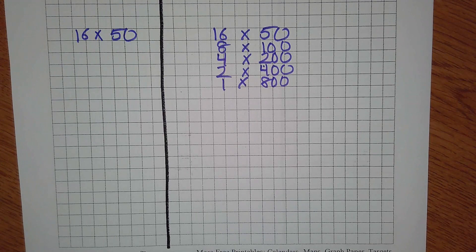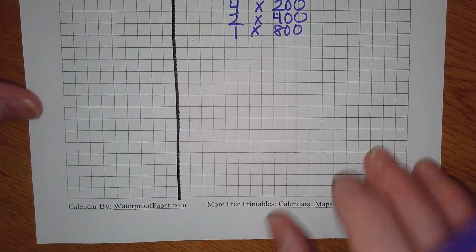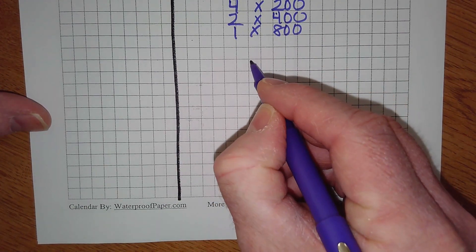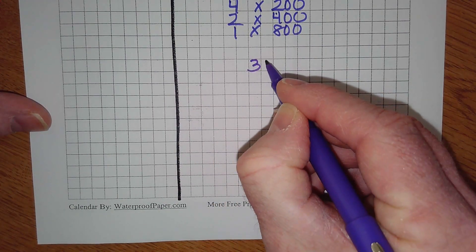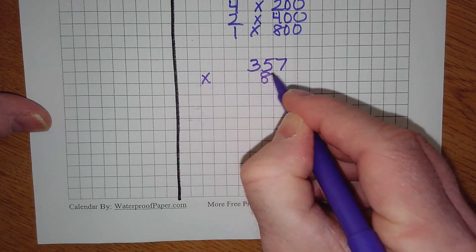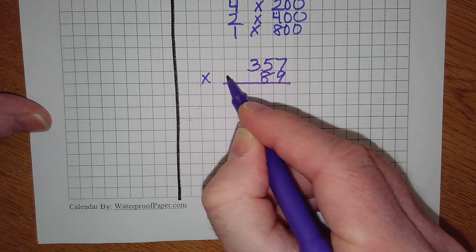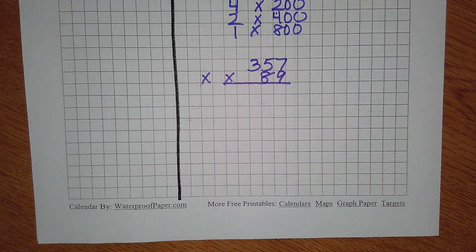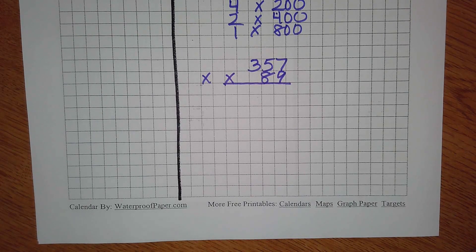Let's try one mom-and-pop and then I'll let you get going. 357 times 89. Mom-and-pop method, standard multiplication algorithm. Can you slide over just a little bit? Keep going. All right, Moose, where should we start with this one?